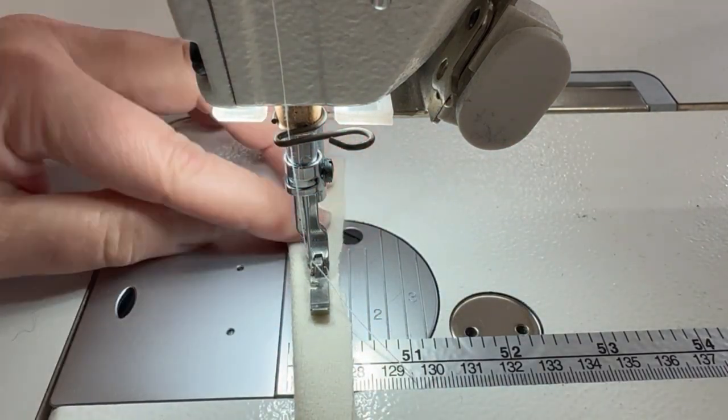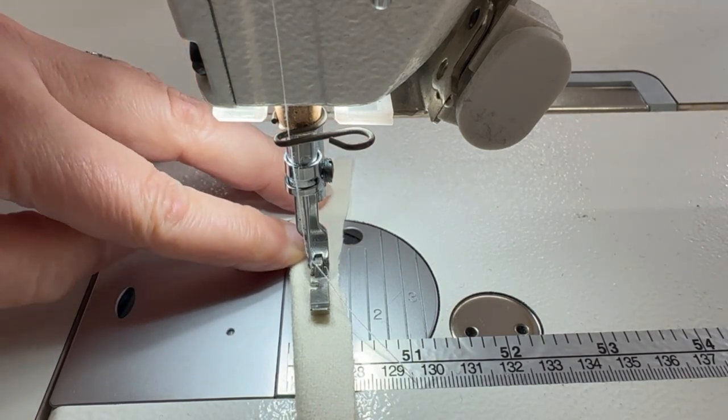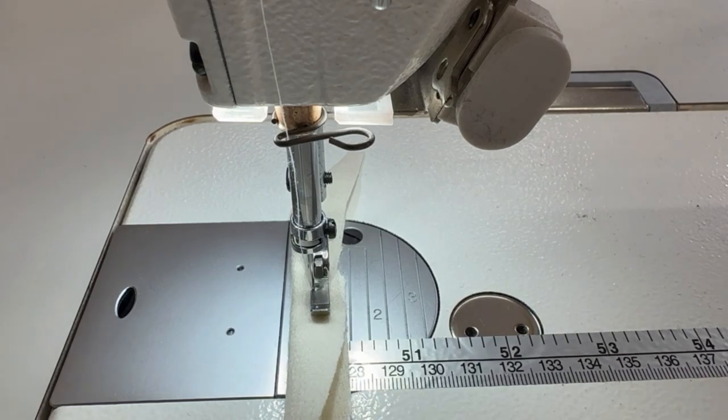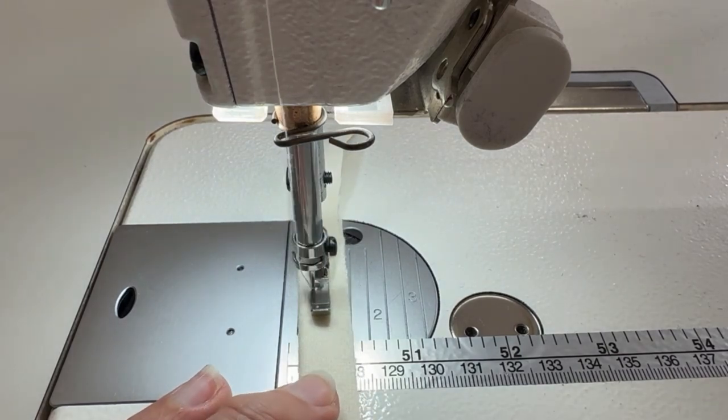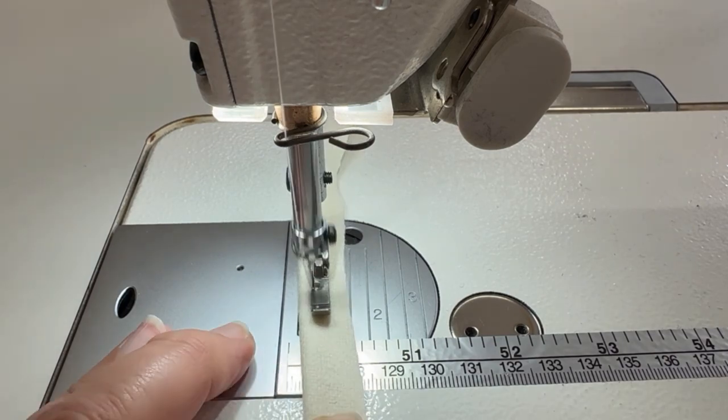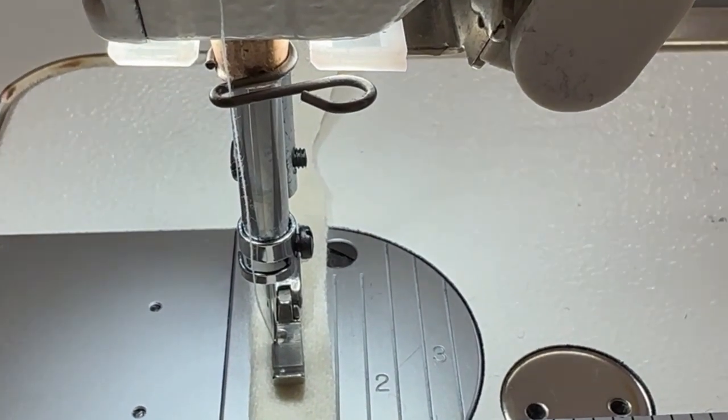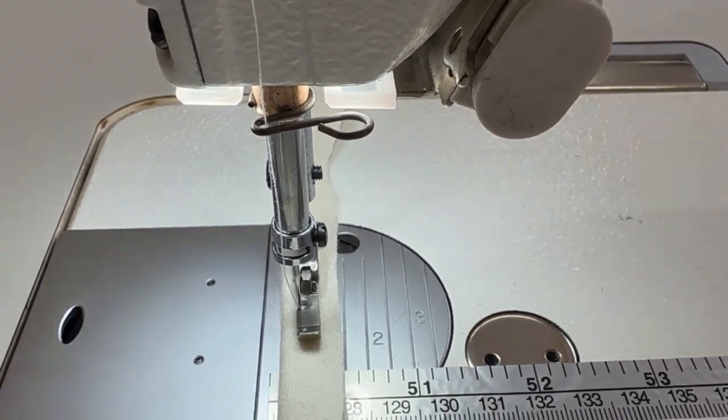What you want to do is sew right up next to it. You can pin this, but if you've watched any of my classes so far, I'm not averse to pinning things, but I don't always pin things. So I'll start myself off there, and then you're sewing as close to that piping cord as possible.